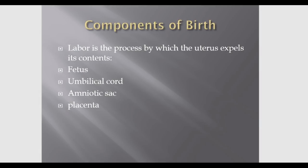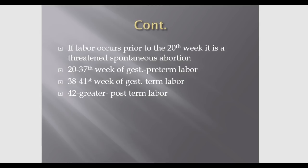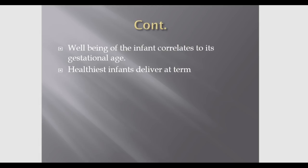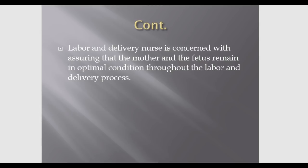Labor is the process by which the uterus expels its contents — the fetus, umbilical cord, amniotic sac, and placenta. Labor prior to 20 weeks is a threatened spontaneous abortion; between 20 and 37 weeks is preterm labor; 38 to 42 weeks is term; over 42 weeks is post-term. The well-being of the infant correlates with gestational age — the healthiest babies deliver at term.